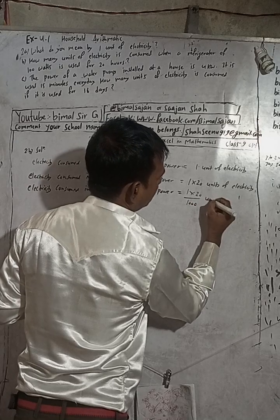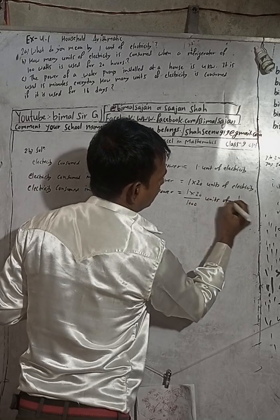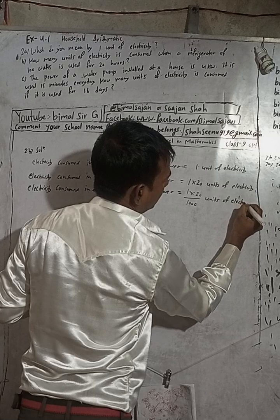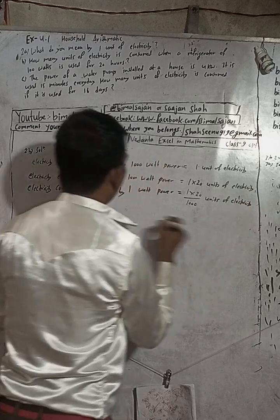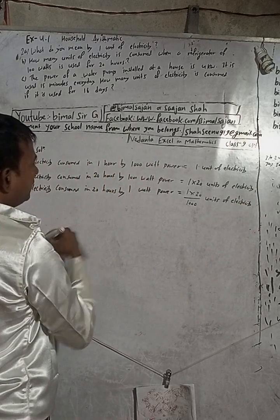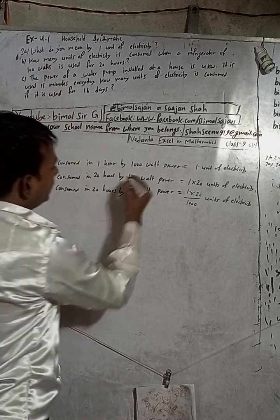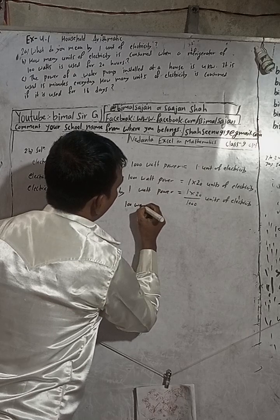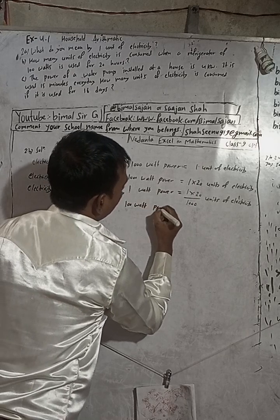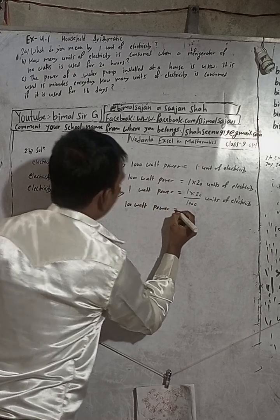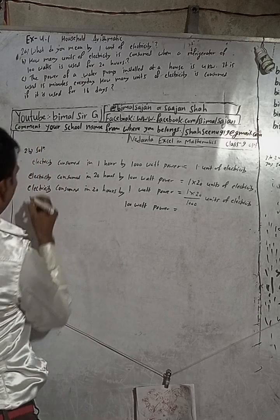1000 units of electricity. Now we got here 1 watt. Now in place of 1, what we want here? We want here 100. So put here 100 watt power. Now see that, copy this: electricity...